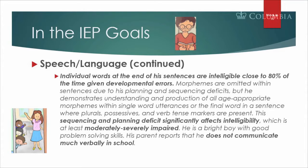Individual words at the end of sentences we found close to eighty percent intelligible given developmental errors. We found morphemes omitted within sentences due to planning and sequencing deficits, but he demonstrates understanding and production of all age-appropriate morphemes within single-word utterances, or the final word in a sentence where plurals, possessives, and verb tense markers are present.